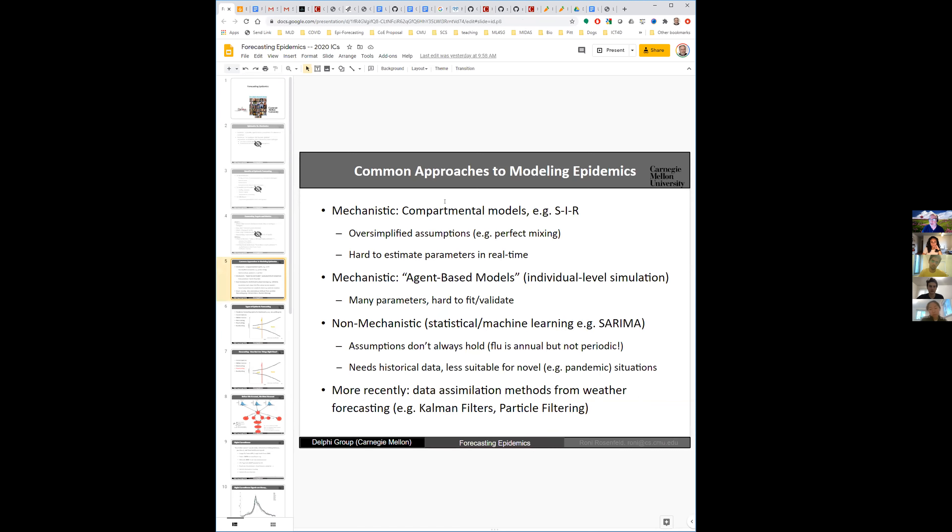Let me jump right into some tech stuff. There are basically four different ways of trying to predict or forecast epidemics. Two of them you might consider mechanistic. Mechanistic means that we have a theory of how epidemics spread. We think we understand more or less how epidemics spread, and then we build a statistical story around that. Then we estimate a few parameters.